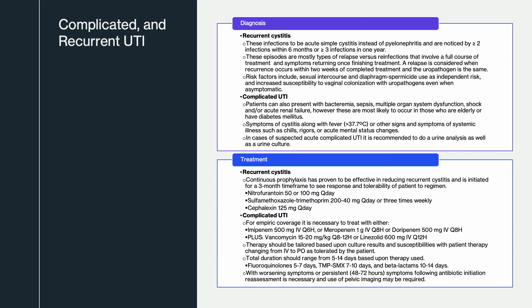It is recommended in a complicated UTI to perform urinalysis as well as urine culture. Treatment for recurrent cystitis is continuous prophylaxis initiated for a three-month time frame to assess response and tolerability. Therapies include nitrofurantoin 50 or 100 milligrams once a day, Bactrim 200/40 milligrams once a day or three times weekly dosing, and cephalexin 125 milligrams once a day. Complicated UTI requires empiric coverage with imipenem, meropenem, or doripenem, plus vancomycin or linezolid. Therapy should be tailored based on culture results and conversion from IV to PO as tolerated. Total duration ranges from 5 to 14 days: fluoroquinolones 5 to 7, Bactrim 7 to 10, and beta-lactams 10 to 14.